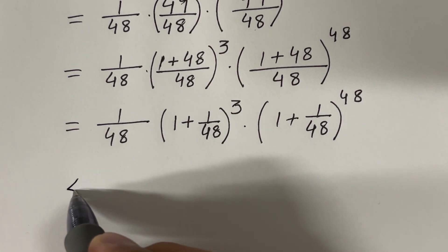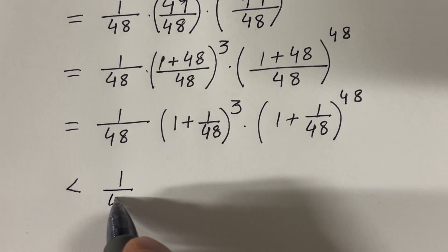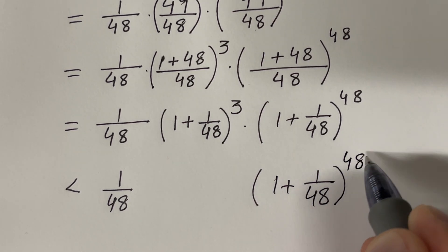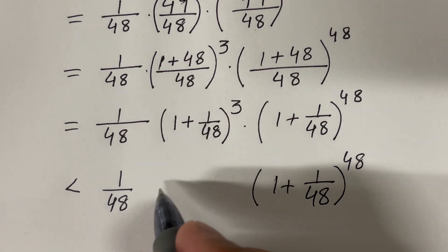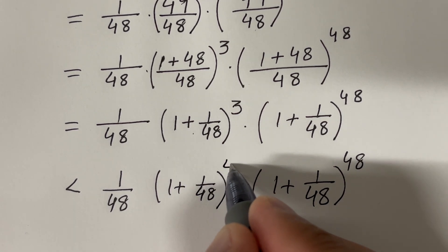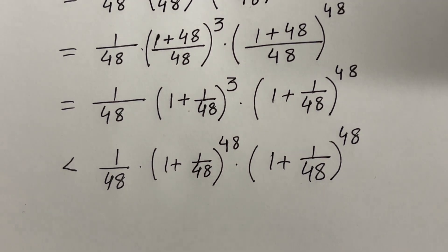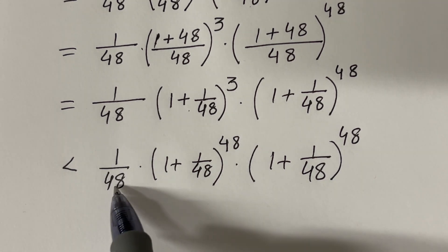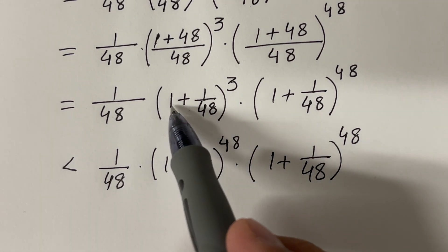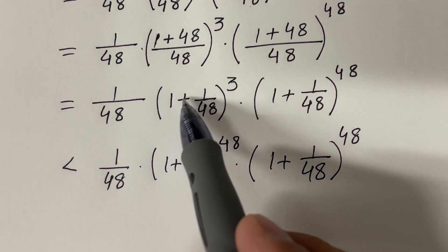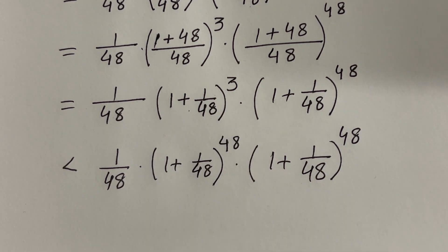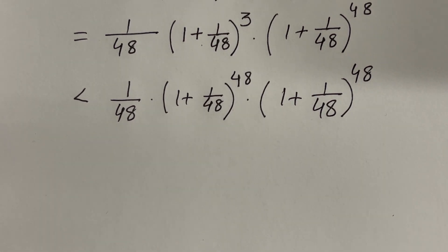Now I can say that (1 + 1/48) raised to the power 3 is less than (1 + 1/48) raised to the power 48. This is correct because this number is bigger than 1, and with exponent 3 versus exponent 48, the version with exponent 48 is way bigger.